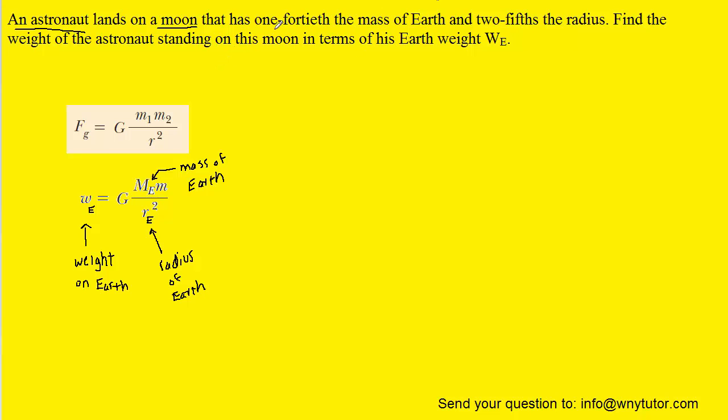The question notes that the moon has 1/40th the mass of the Earth. This can be written as: the mass on this moon, which we'll call X, equals 1 over 40, which represents the 1/40th, multiplied by the mass of the Earth.